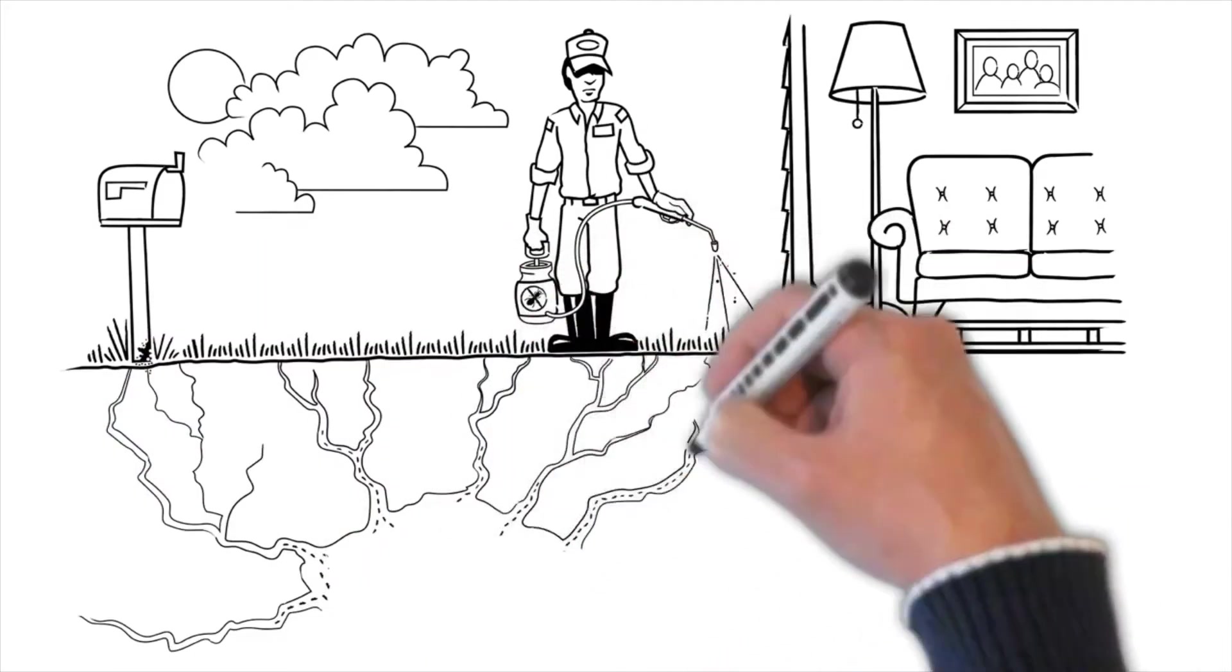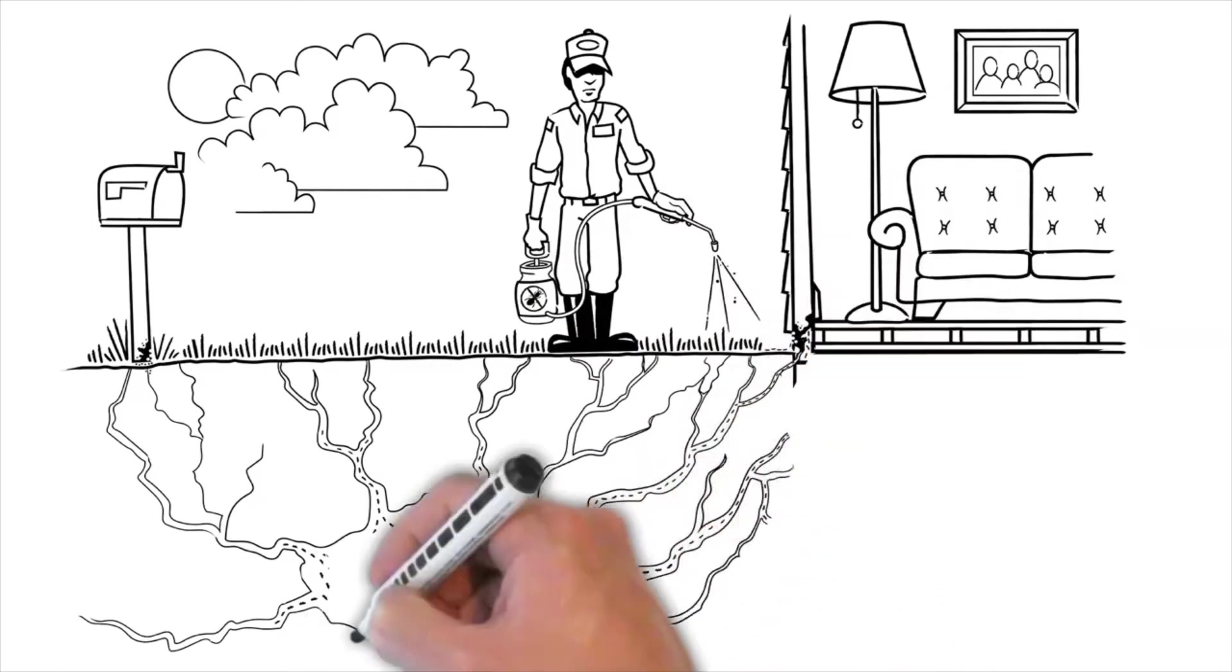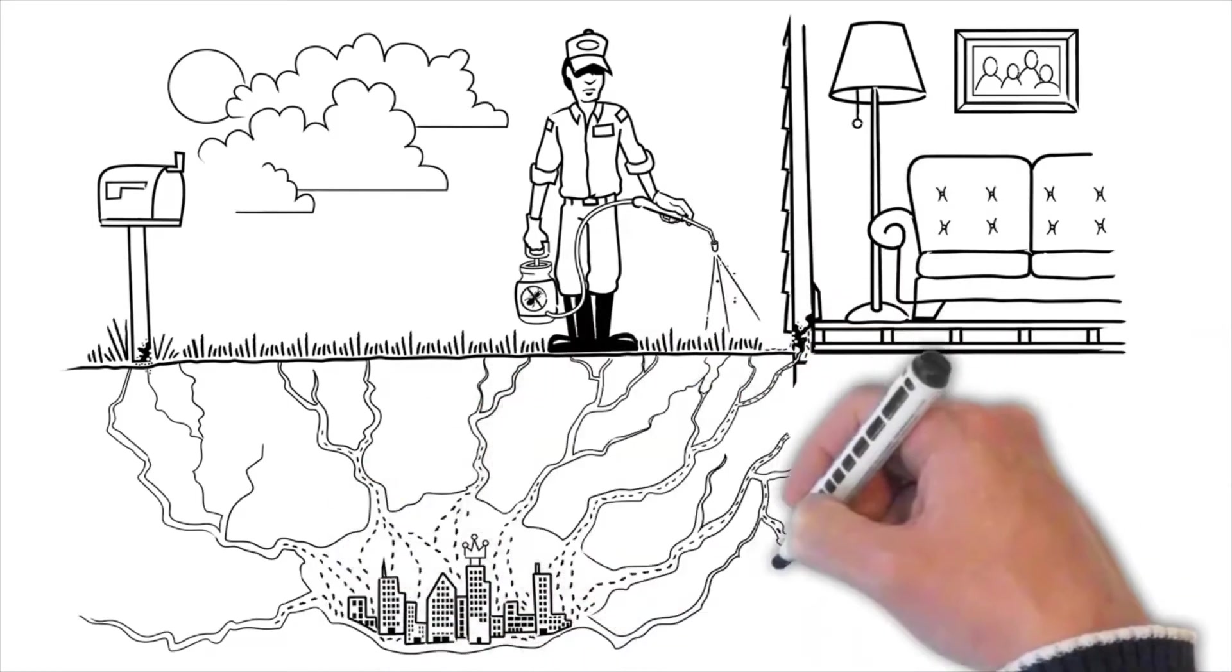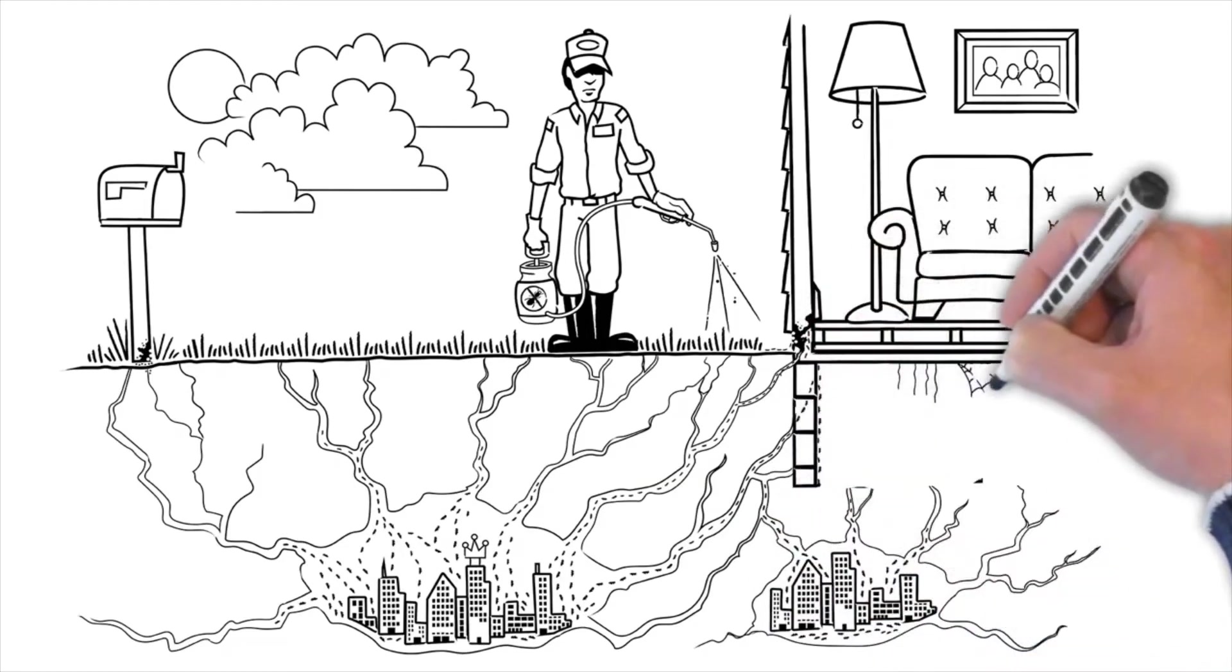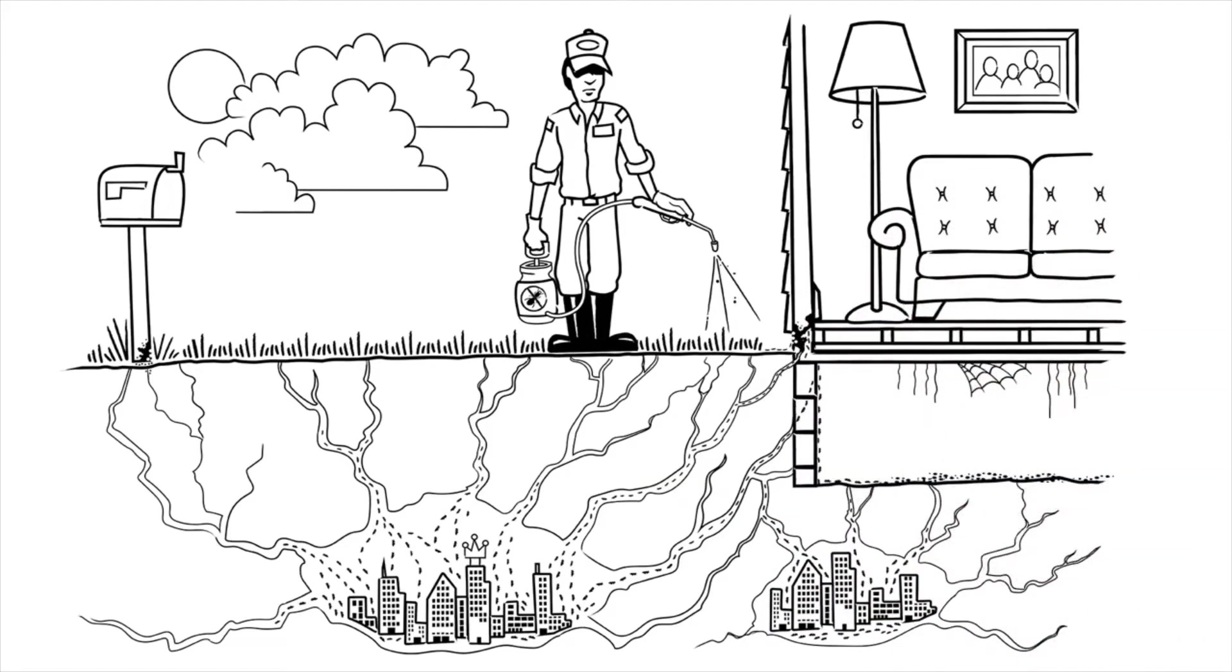The odds are, liquid treatments are only going to kill a small fraction of the thousands of food-foraging termites. And the ones that remain can go under or around whatever barrier is formed. Likely, that colony is going to rebound.